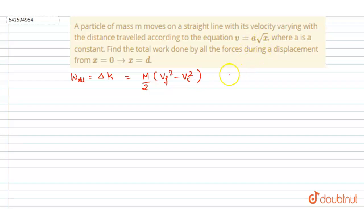So just put the value of v here. You'll get a square x final minus a square x initial. So x initial is 0 here, right? Just put the value of x final and x initial here. You will get this change in kinetic energy, and this is the work done by all.